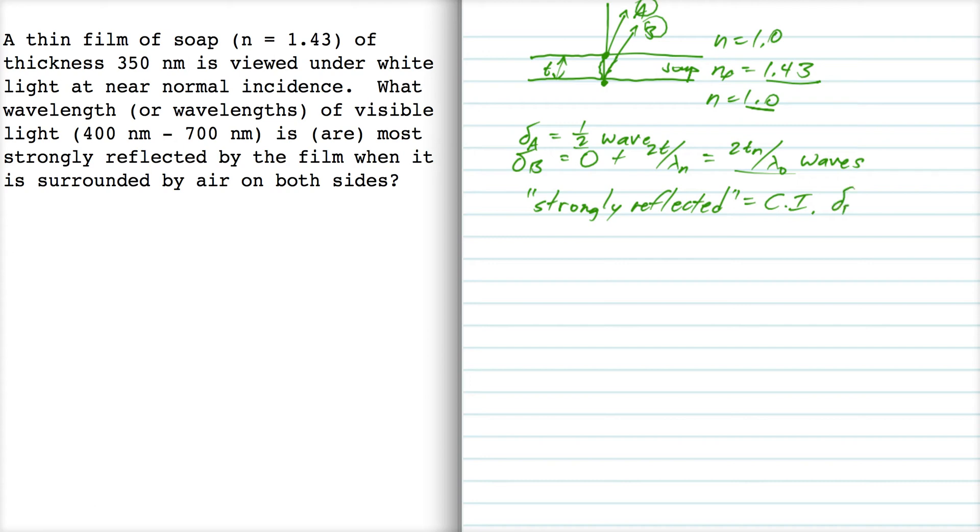delta B minus delta A, we're going to set that equal to zero, one, two, and so on, that many waves, alright? So let's start, let's start with the first condition.